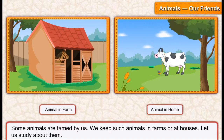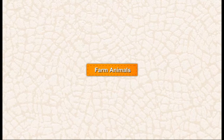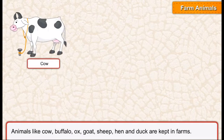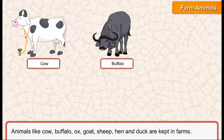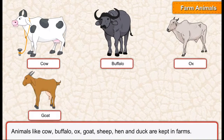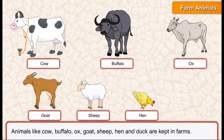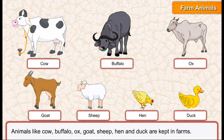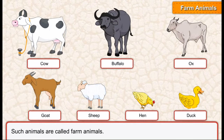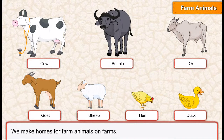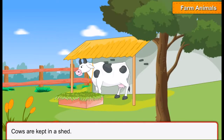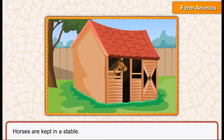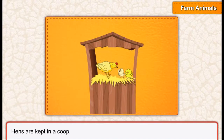Farm animals — animals like cow, buffalo, ox, goat, sheep, hen, and duck are kept in farms. Such animals are called farm animals. We make homes for farm animals on farms. Cows are kept in a shed, horses are kept in a stable, and hens are kept in a coop.